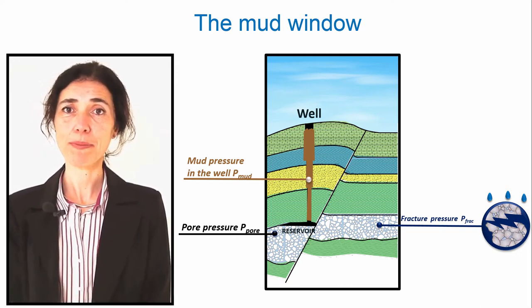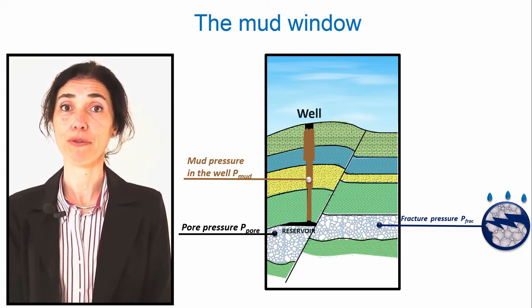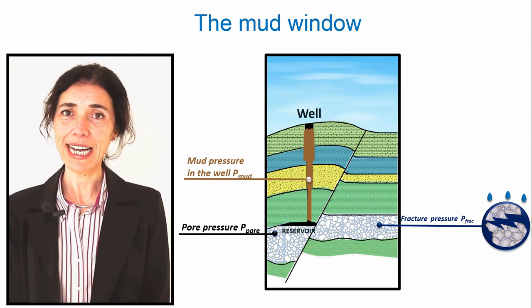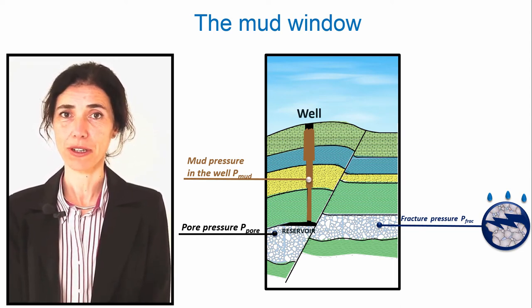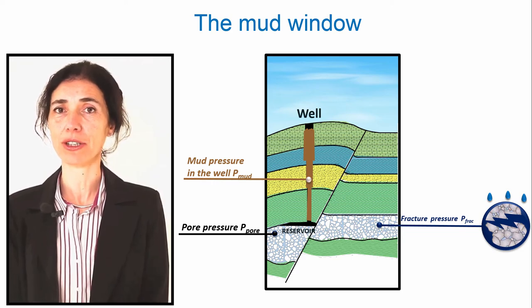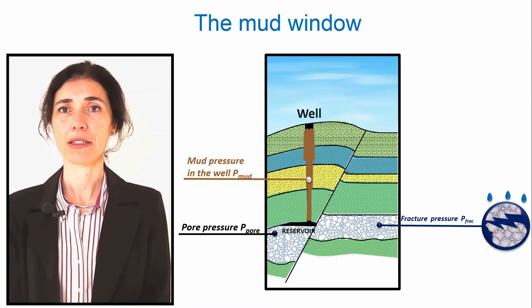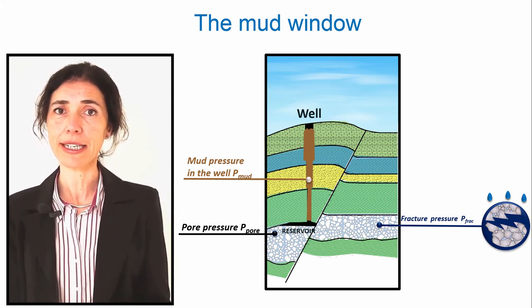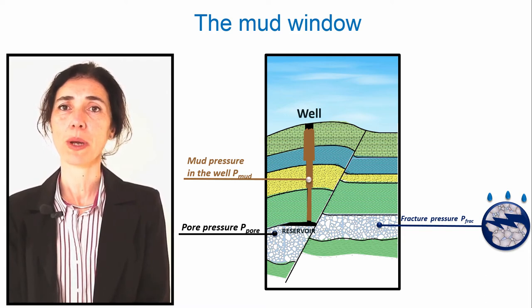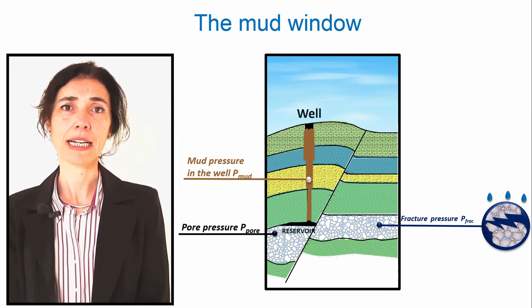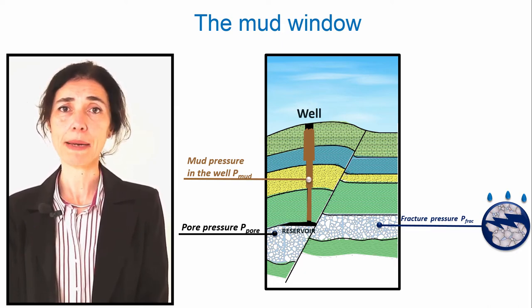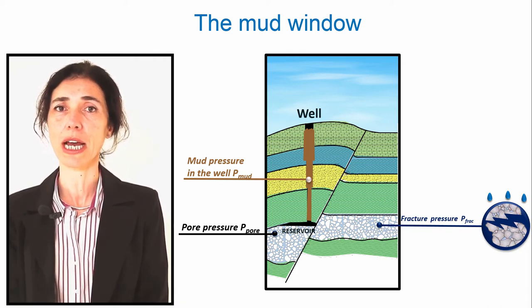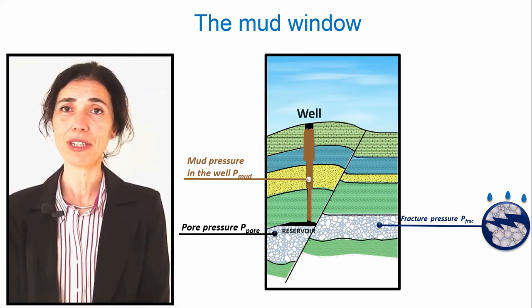The mud pressure also has to be lower than the fracture pressure. If the mud pressure is higher than the fracture pressure, the rock will be fractured. Then the mud will enter this fracture instead of flowing up to the surface. The level of the mud column in the annulus will go down and consequently the mud pressure will decrease — finally falling below the pore pressure, causing formation fluid to enter the well. So the mud has to be lower than the fracture pressure. To conclude, keep in mind that the mud pressure must belong to the interval between the pore pressure and the fracture pressure. This interval is called the mud window.